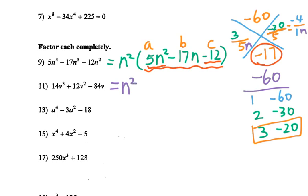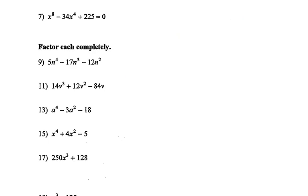So I write down n squared, bring down, and you get (5n + 3)(n − 4). That's the bottom-up result — that's your answer for number 9. Now let's go to number 11.